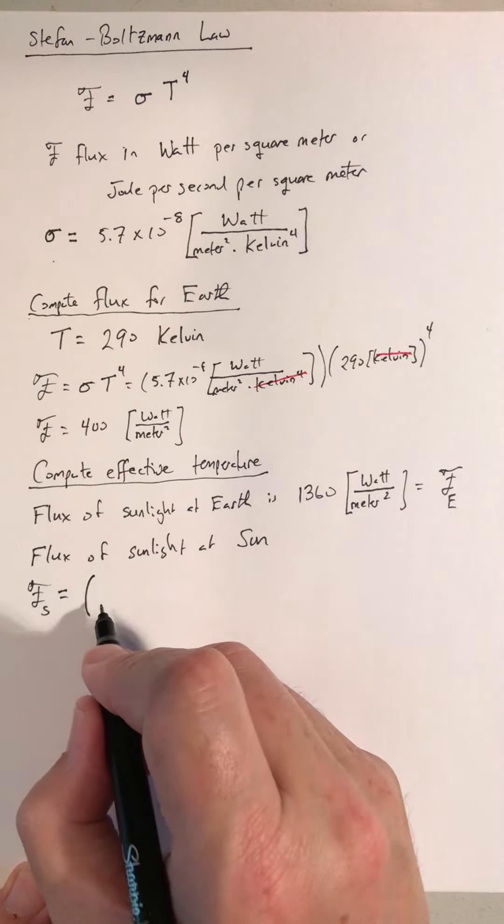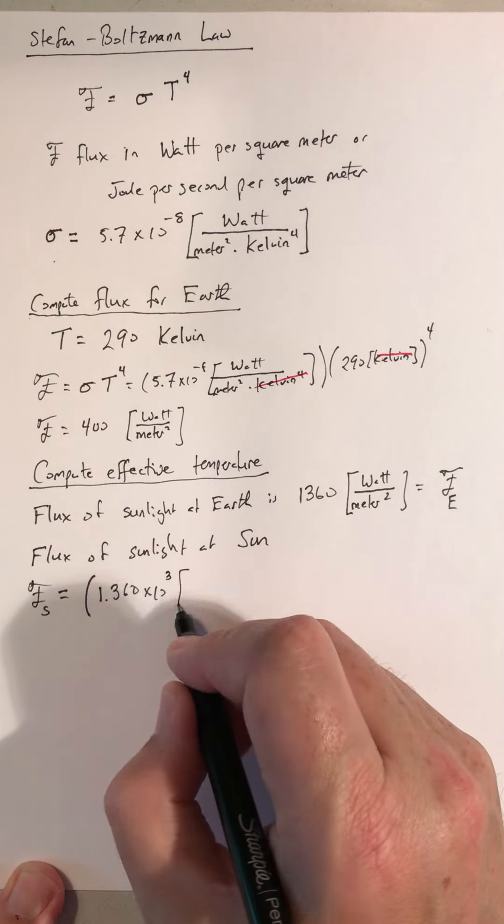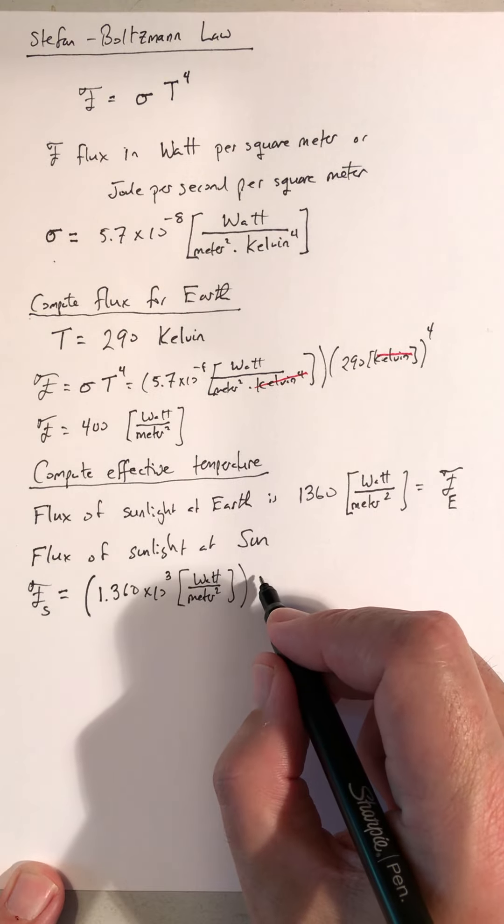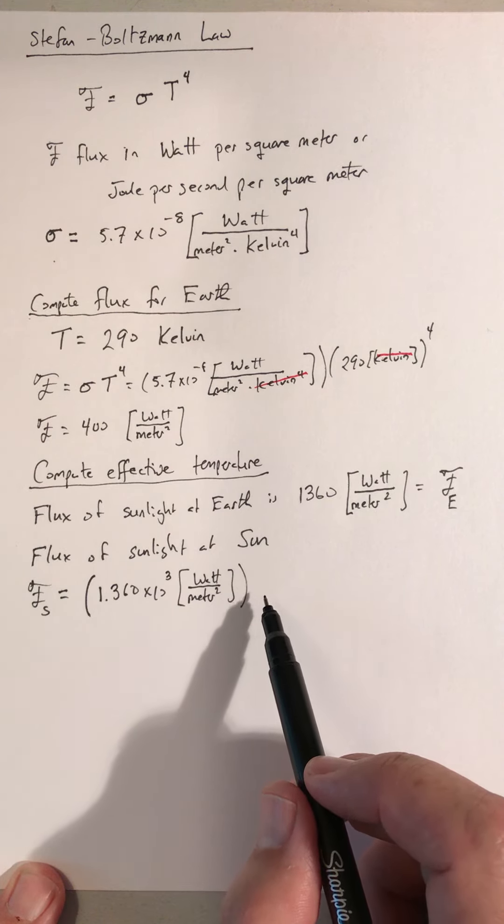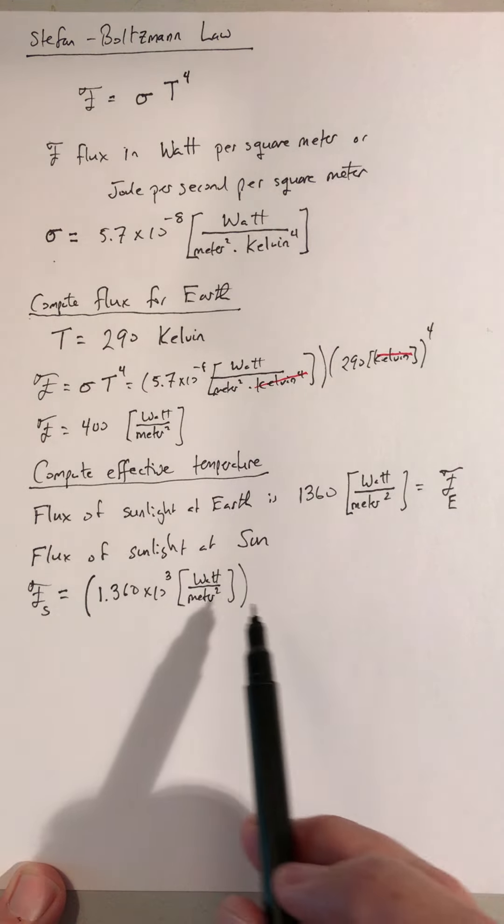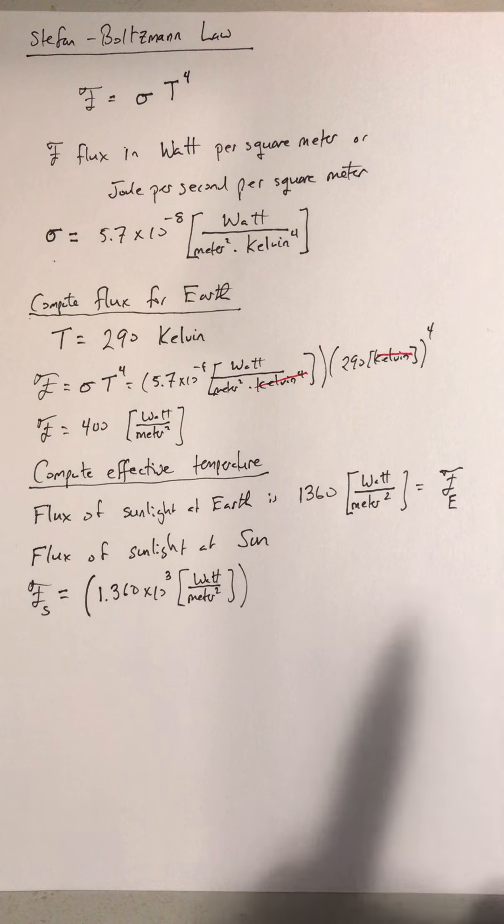So that's going to be this flux, the flux we measure here at Earth, 1.36 times 10 to the 3 watts per square meter. And then I'm going to multiply by the surface area of a sphere whose radius is one astronomical unit. And then I'm going to divide by the surface area of a sphere whose radius is the radius of the Sun. So that's going to take the flux from what we observe here at Earth after the light from the Sun is spread out over a sphere equal to the radius of our orbit, and scale it to be the flux passing through a sphere whose radius is the surface of the Sun.